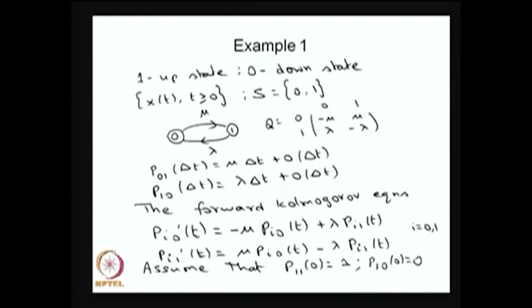This is the state transition diagram for the two-state CTMC. The corresponding Q matrix — the infinitesimal generator matrix — is a 2×2 matrix. The rate from state 0 to state 1 is mu, and the rate from state 1 to state 0 is lambda. The diagonal values are the negative sum of the other row values, so the (0,0) entry is −mu and the (1,1) entry is −lambda.